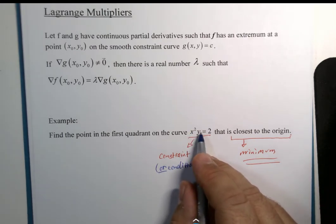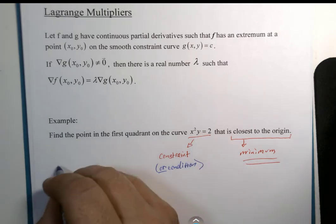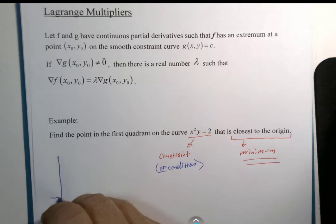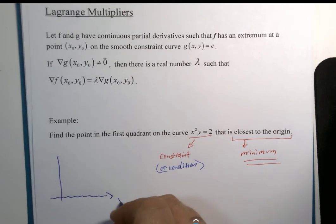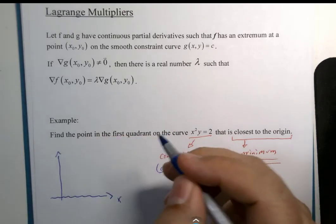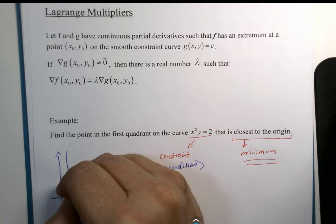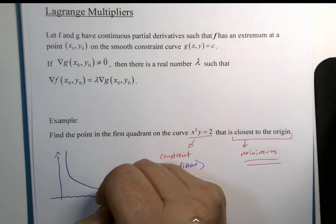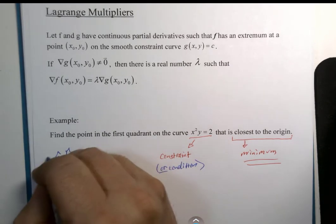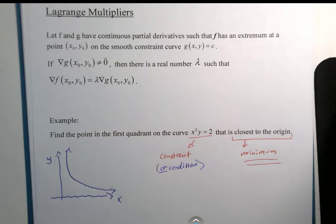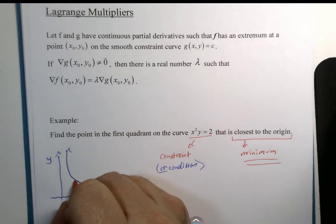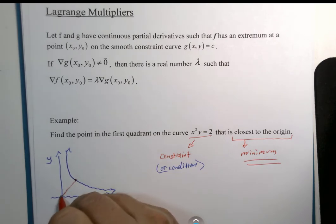If you were to graph this, it's a cousin of y equals 1 over x in the first quadrant. And it might look something like this. And what we're trying to do is find that point, maybe it's about here, that is closest to the origin, 0, 0.